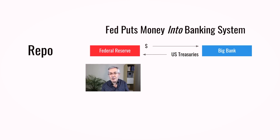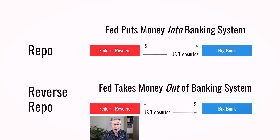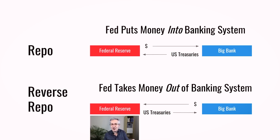Hopefully the bank will then go out and lend money to the real economy, which is then stimulated. As the name suggests, reverse repo is exactly the same thing but in the opposite direction. In this case the Fed is actually draining liquidity out of the banking system and injecting treasuries onto the bank's balance sheet. It doesn't have to be a bank — it could also be another type of counterparty like a money market fund, and that's going to be relevant later on.